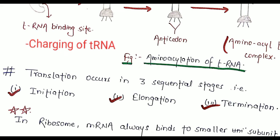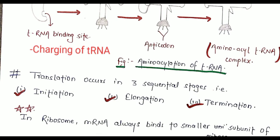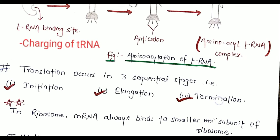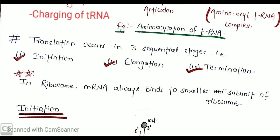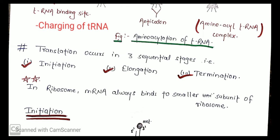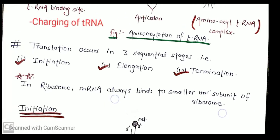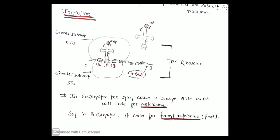Translation occurs in three sequential stages: initiation, elongation, and termination. One important point to keep in mind is that in the ribosome, mRNA always binds to the smaller subunit of the ribosome.